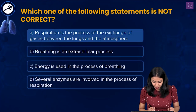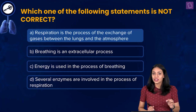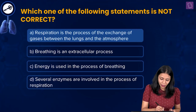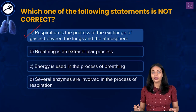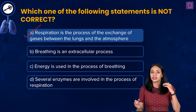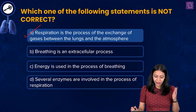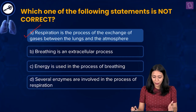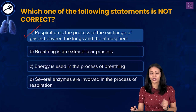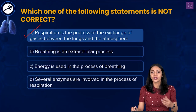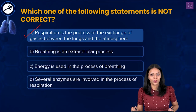The contraction of these muscles consumes energy in the form of ATP. Now, among the four statements, we were asked to identify the incorrect one. The correct answer is option A, because the statement in option A — that respiration is the process of exchange of gases between the lungs and the atmosphere — is incorrect. That description actually refers to breathing, not respiration.